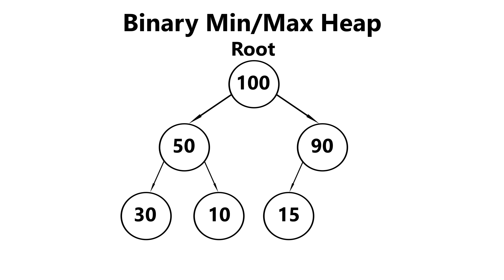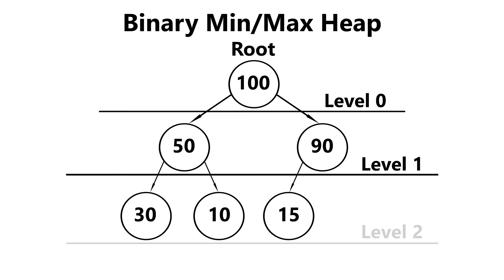So let's take a look at this example. You can see that level zero is full. Level one is full. And level two is not full. But the nodes here are at the leftmost point where we could insert at. So this is considered a complete tree.